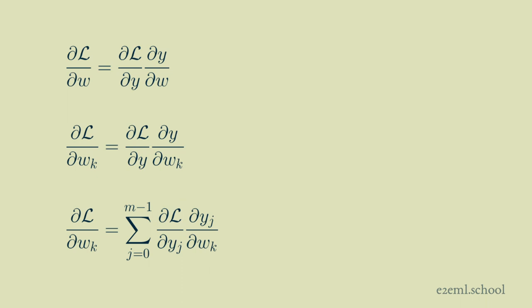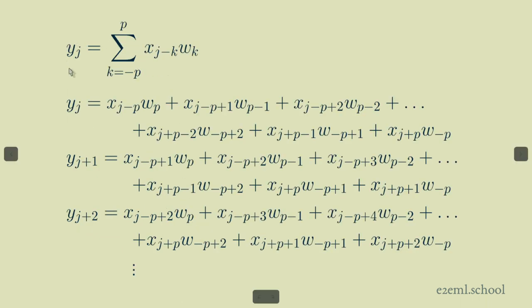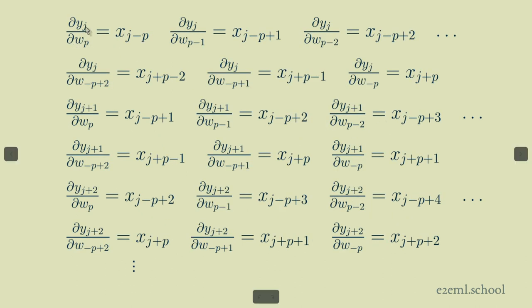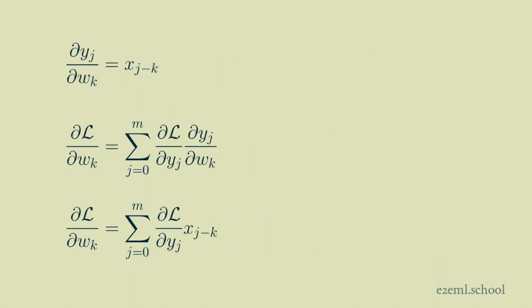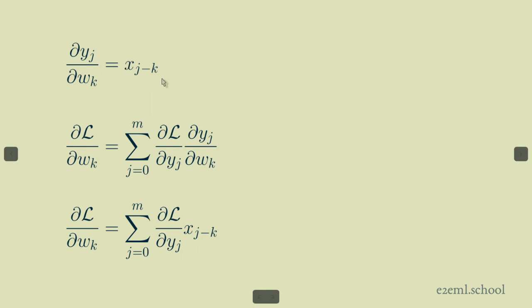At this point, we can do the same process as before. We take the full expression for our convolution and expand it out — this is the exact same equation we had before. Taking the partial derivative of each weight with respect to each output y sub j, we see symmetrically the results become various values of the input: x sub j minus p, x sub j minus p plus one. Rearranging and condensing those, the partial derivative of our outputs with respect to each weight equals the input indexed at j minus k.